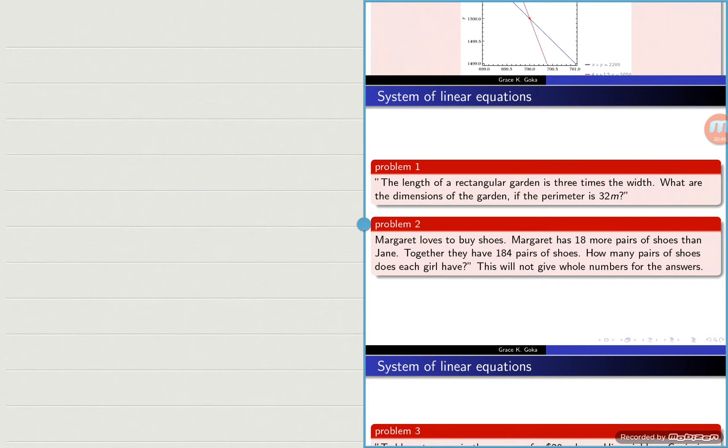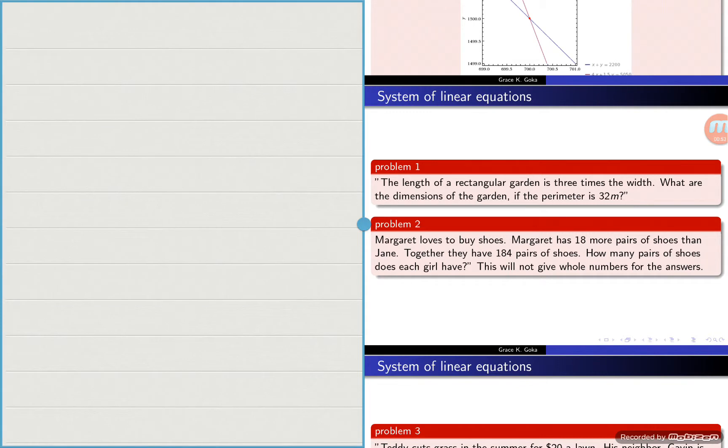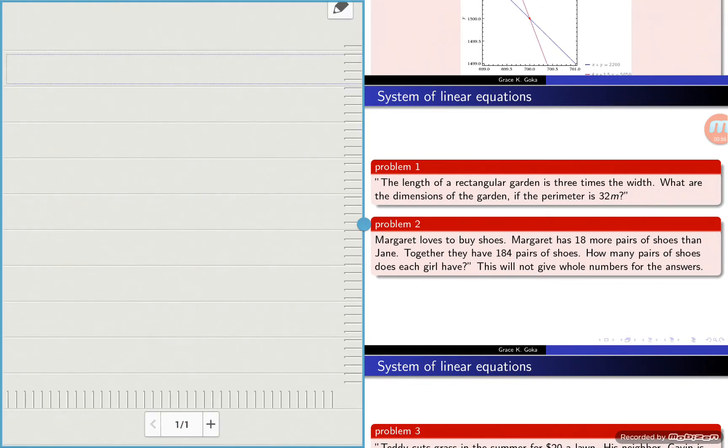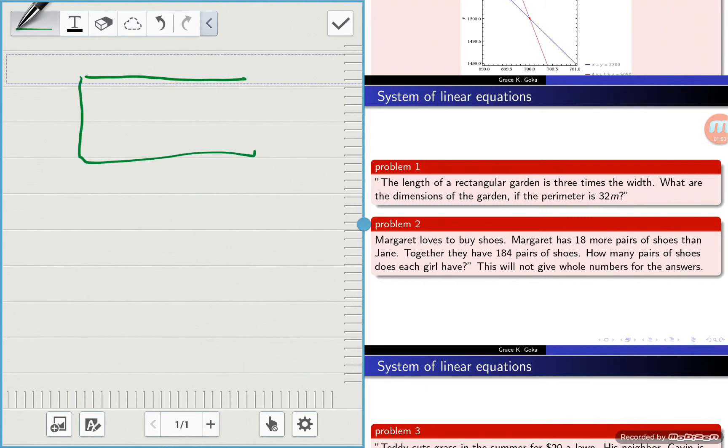So to make things easier, let's try to get a pictorial view of our problem. For problem number one, let's put down a pictorial view of our garden.